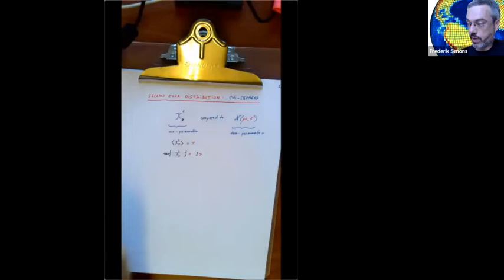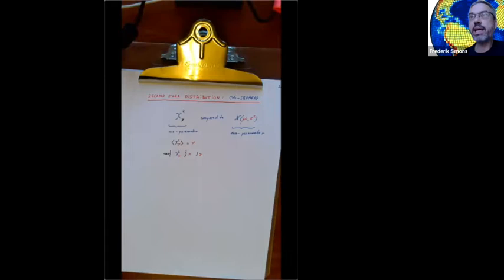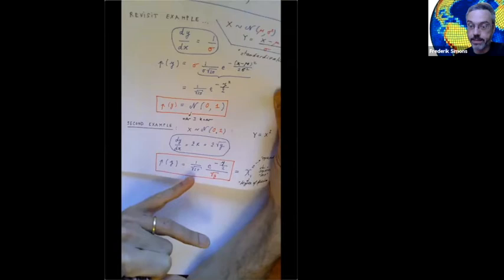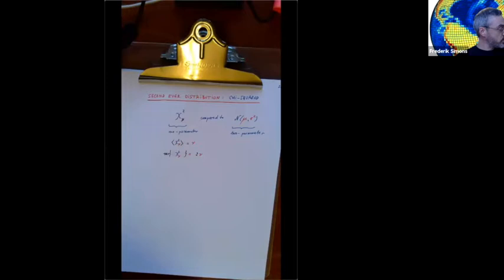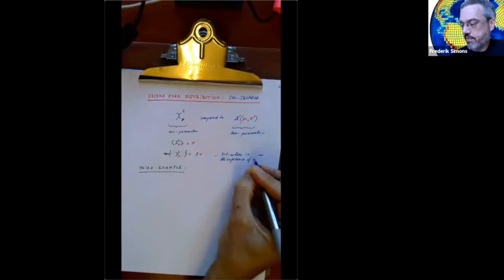Obviously, this was not apparent from the initial definition, because you have no idea where ν is when ν is one — you can't see it. So I'm going to dig it up. Where is ν in the expression for the PDF? In order to get to that question, I really should know what else is going on. So my third example is: let z be distributed as standard normal with mean zero and variance one.